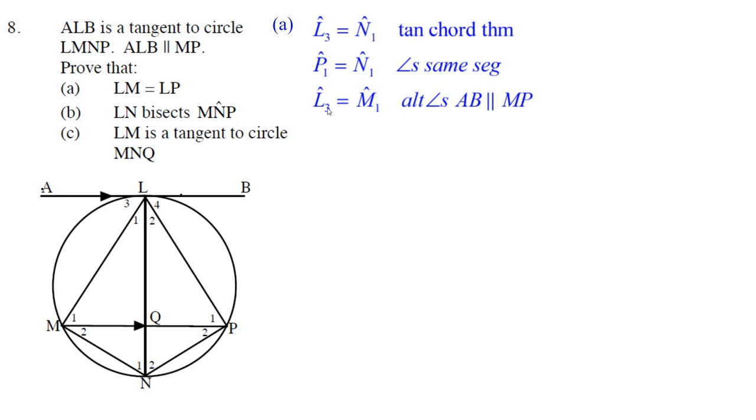Well, that means L3 must be equal to—now we know something else here. L3 is equal to M1. Why? Because those are parallel lines. That's alternate angles. AB being parallel to MP makes that angle L3 equal M1.